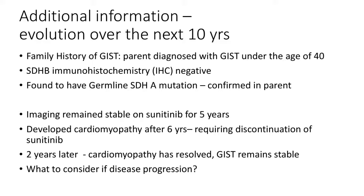This patient had SDH-deficient GIST, and over the next decade of care we learned that the patient had a family history of GIST — a parent was diagnosed with GIST under the age of 40. The tumor was SDHB negative and therefore characterized as SDH-deficient GIST. Because of the family history and what we've learned from the NCI Pediatric Clinic, the patient was found to have a germline SDHA mutation — meaning the gene was abnormal not just in the tumor, but in all cells of the body. This mutation was also present in the parent and was passed on to the daughter.